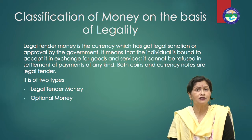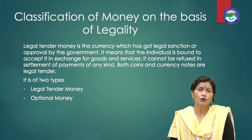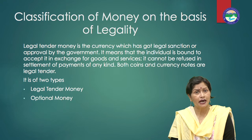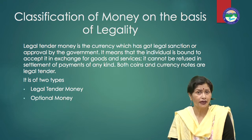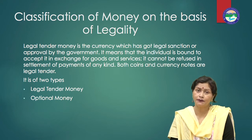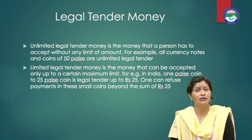One is legal tender money. Legal tender money is the currency which has got legal sanction or approval by the government. It means that the individual is bound to accept it in exchange for goods and services — it cannot be refused in settlement of payments of any kind. Both coins and currency notes are legal tender. They have the backing of government and serve as money on the fiat order of the government. However, a person can legally refuse to accept payment through cheques because there is no guarantee that a cheque will be honoured by the bank in the case of insufficient deposits.